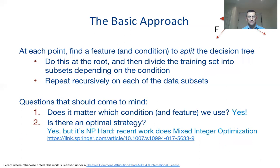So what's the basic approach? The basic approach is to find a feature at every point and a condition related to that feature that would split the existing dataset into smaller datasets, giving us a clear picture of the class of the data by different subsets. We do that by starting at the root and continue splitting the data recursively into smaller and smaller subsets until we reach some termination point — maybe we can't split the data anymore, or we have fewer than a certain number of points.